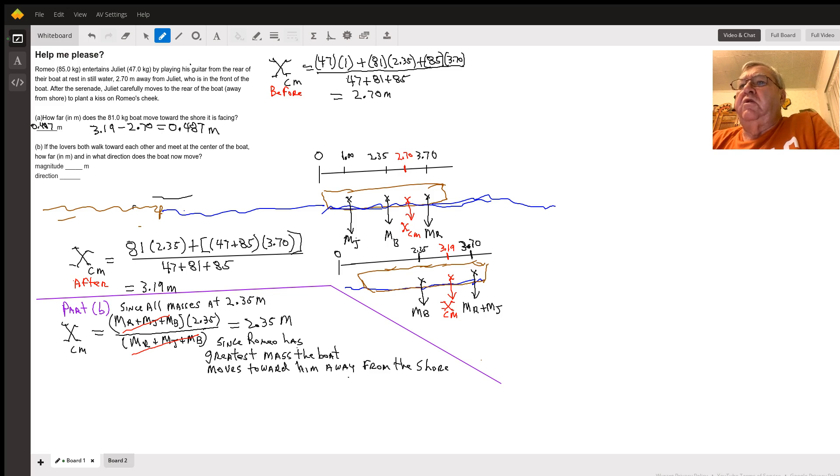The center of mass position before they switch is 2.7 meters. I've shown here's the first diagram, here's the second diagram when they switch. Now Juliet goes from the front of the boat down to the back of the boat.